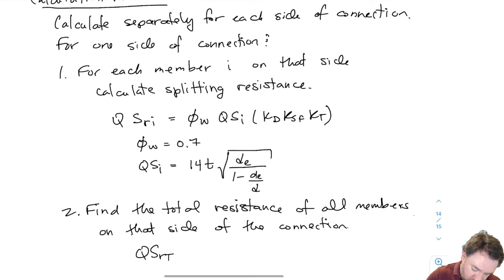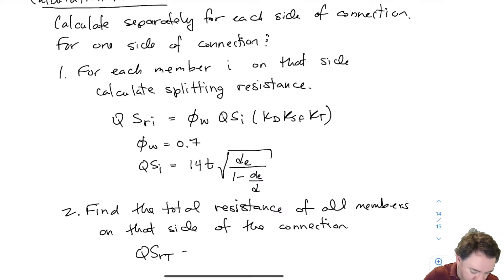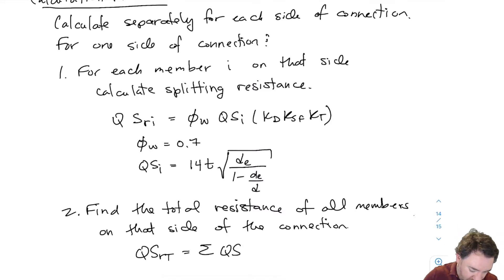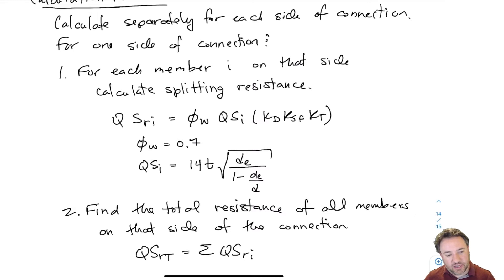Then I find the total: QSRT — Q for perpendicular, S for splitting, R for resistance, T for total — is the sum of all the individual resistances for each of the members. That's how I get my QSRT, which is my total perpendicular-to-grain splitting resistance.